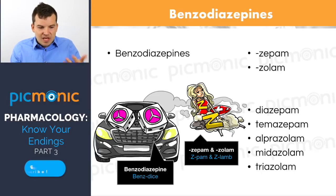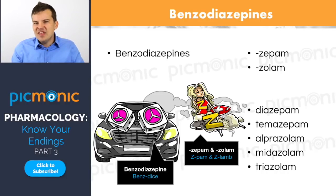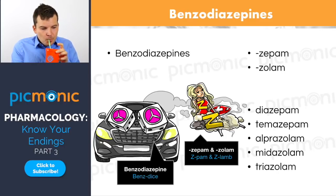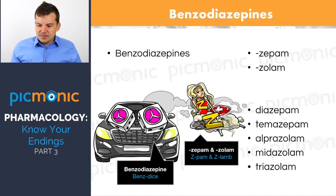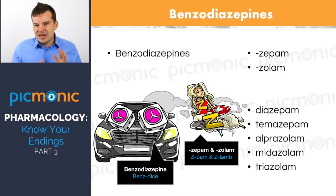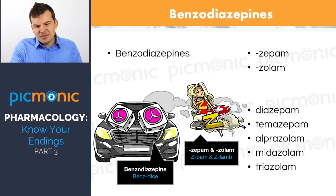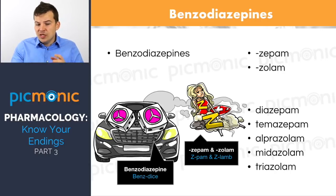What do we worry about when giving benzodiazepines? Respiratory depression — going to sleep and never waking up. There's also the risk of addiction, because some people really love that CNS depression. You often see abuse of these medications just as with sleep medications. Side note pop quiz: what's the reversal agent for a benzodiazepine? It's flumazenil — a flute mace with nails in it to remember it inside Picmonic.